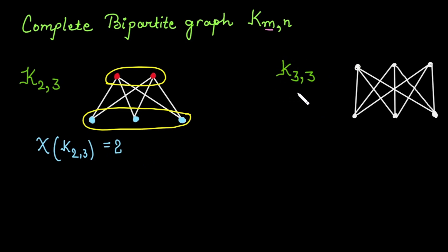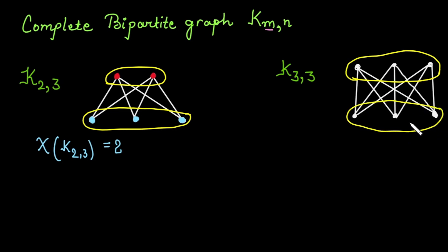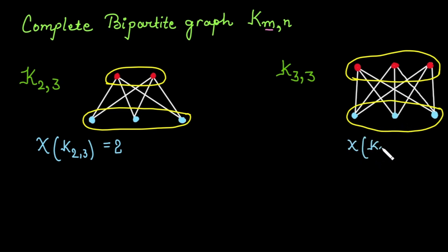For K3,3, again we divide into two sets of three vertices each. All three vertices in set 1 are not adjacent to each other, so they all get red. All three vertices in set 2 are adjacent to the red vertices and not adjacent to each other, so they all get blue. Total colors used is 2, so the chromatic number of K3,3 is 2.